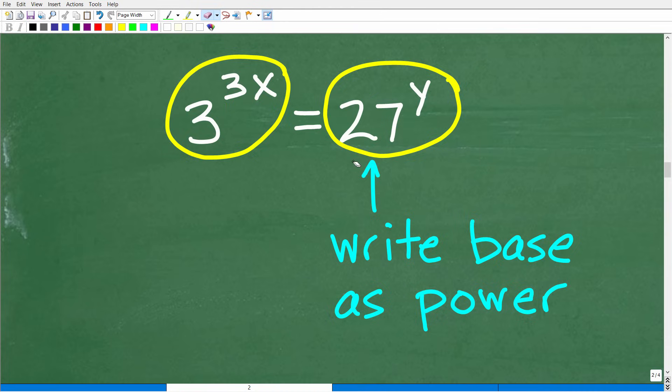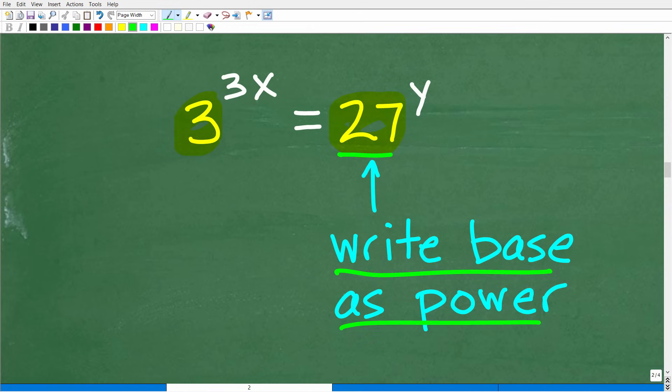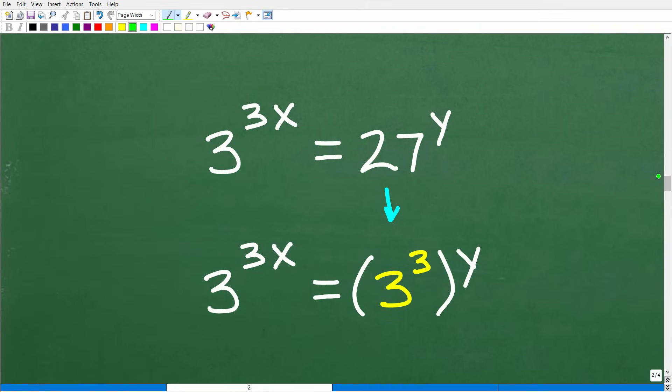And the only way we're going to set this up is to see if we can get the bases the same. Here we do not have the same bases in these powers. This one has 3, this one has 27. So what you want to do is to take these bases that are involved in these powers and look at the bases and try to write them as the same base. Here, this 27, we can be like, you know what, I can write 27, I can write that base as a power in and of itself. Can you think of a power that is the same as 27? I'm pretty sure a lot of you are saying, oh, yes, I know what that is. We can think of 27 as 3 to the third power. And this works out fantastic because now we have 3 as our base. So we have 3 to the 3x is equal to 3 to the third power to the y.